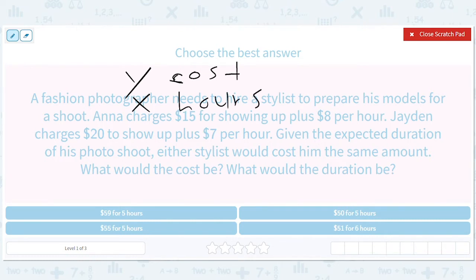We'll do the first one slowly and then I'll speed up for the next. So the cost for Anna is a $15 flat cost to just show up and then for every hour she charges eight. So it'll be eight times the number of hours.